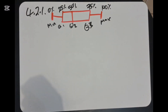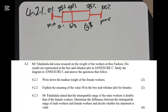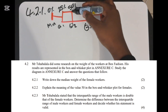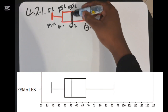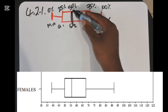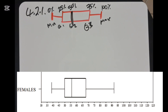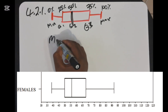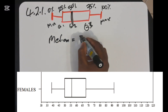Question 4.2.1 says: write down the median weight of female workers. The median is found at Q2. Looking at the female box and whisker diagram, we trace the Q2 line and it leads us to approximately 56. So the answer for 4.2.1 is: median = 56 kg.